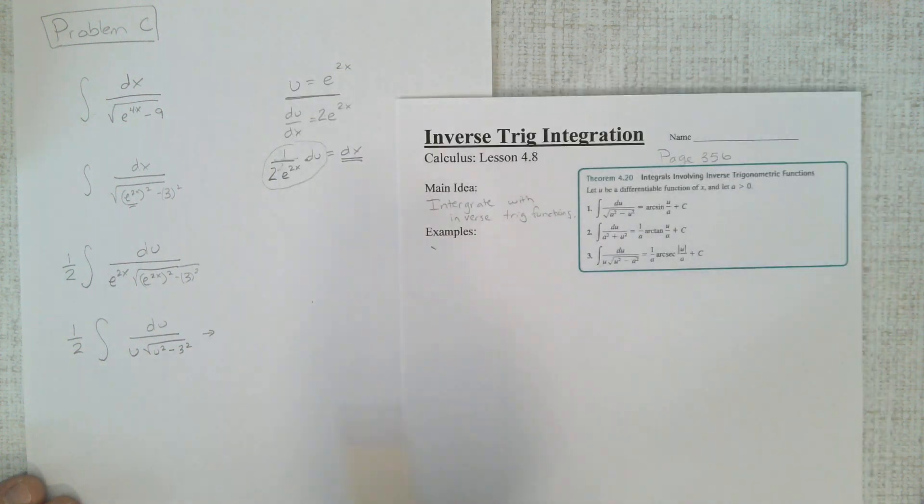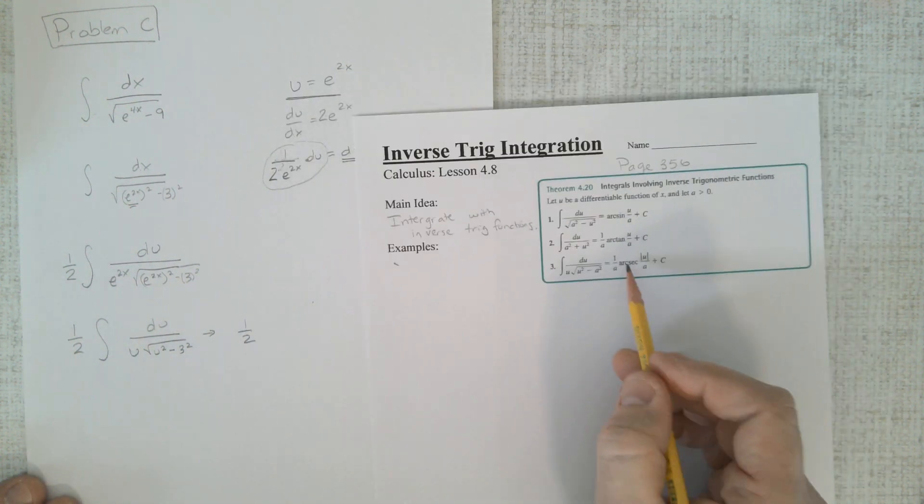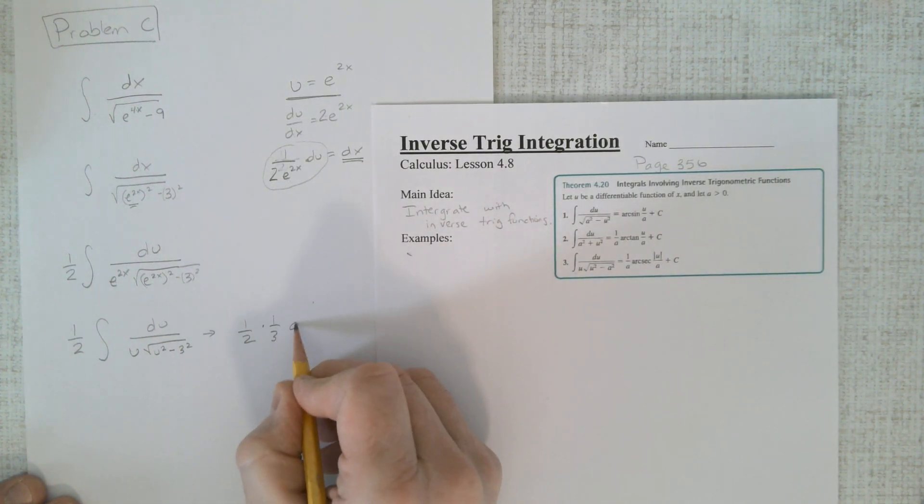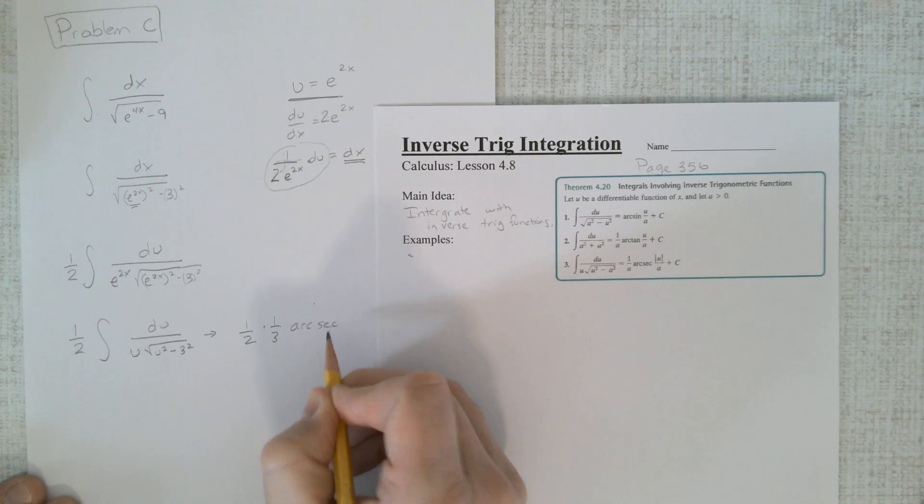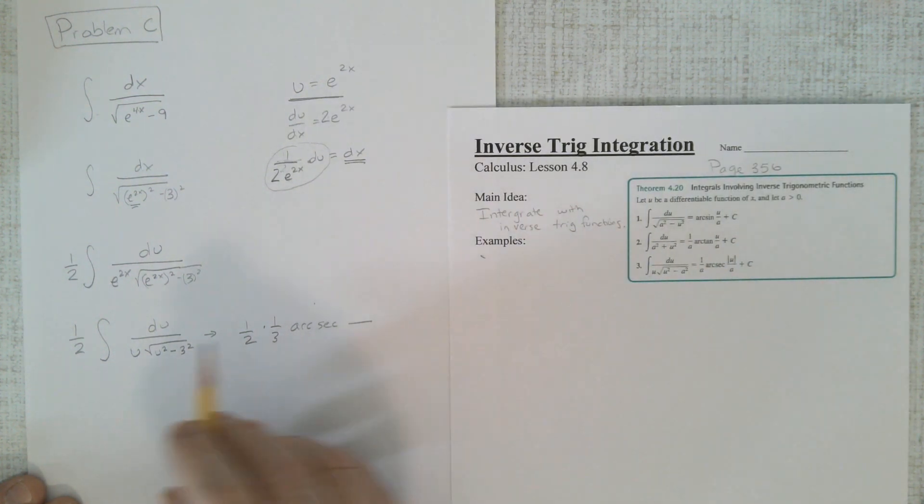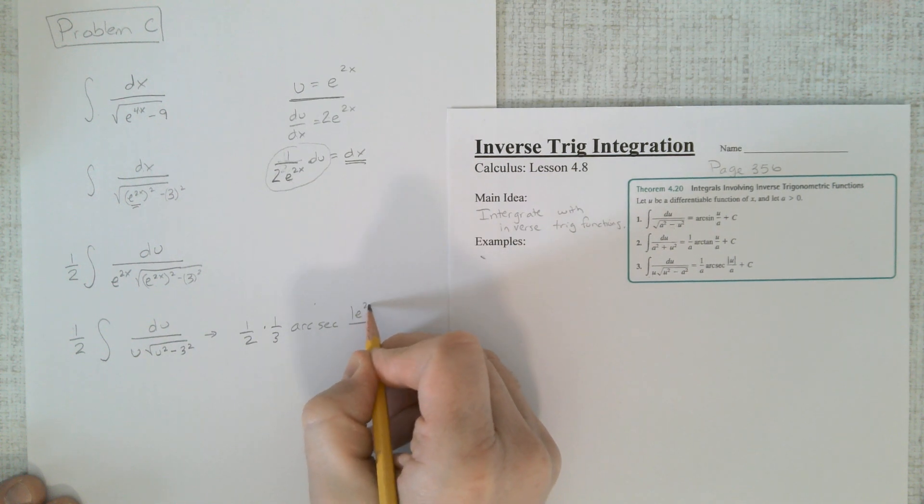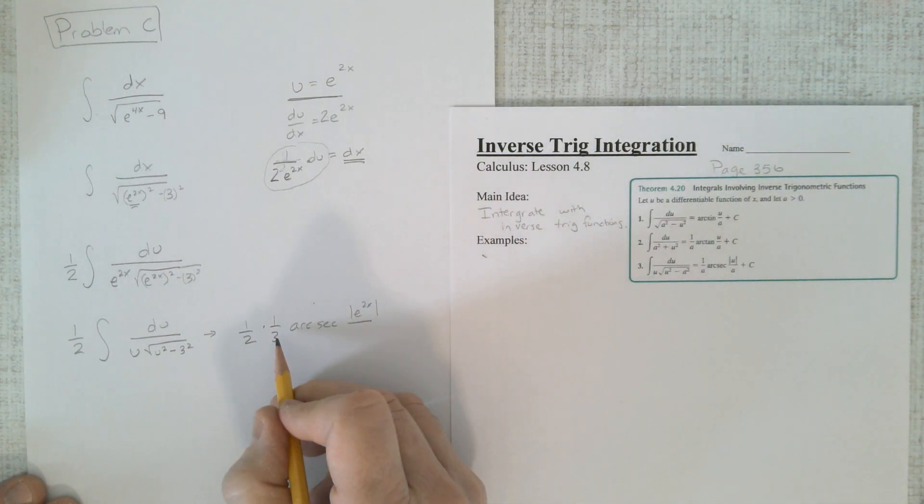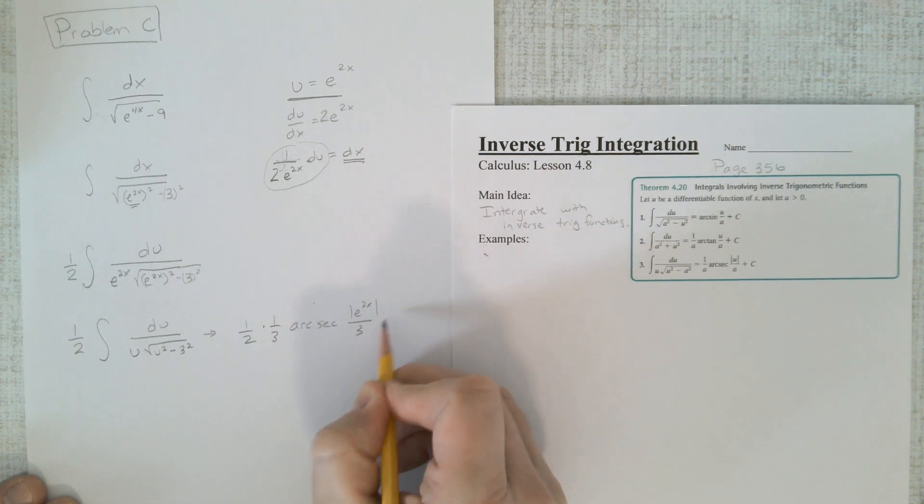Don't forget the constant. 1 over a. That's 1 over 3. Arc secant. Absolute value of the u, which is e to the 2x. And over a, which is 3, plus c. 1/6 arc secant e to the 2x over 3 plus c.